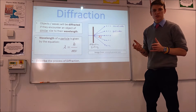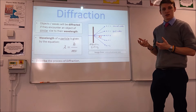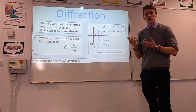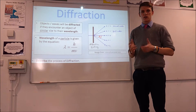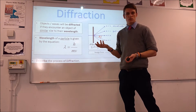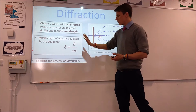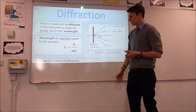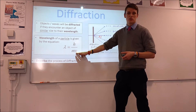So along comes electron diffraction. Let's just do a quick overview of what diffraction is — you would have met this before in year 12. An object is diffracted if it encounters something the same size as its wavelength. A lot of people think the only thing that can cause diffraction is a slit, but that's not true. If you encounter anything the same size as your wavelength, you're going to be diffracted by it. For particles, their wavelengths are calculated using this equation, which you would have probably met in year 12 — it calculates the wavelength of a particle if you know Planck's constant, its mass, and its velocity.